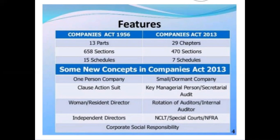The Companies Act 2013 is divided into 29 chapters. There were 658 sections in the 1956 Act and 470 sections in the 2013 Act, with seven schedules. Some new concepts introduced in the 2013 Act include: one-person company, small and dormant company, class action suits, managerial personnel and secretarial audit, women and resident directors, rotation of auditors and internal auditors, independent directors, NCLTs, special courts, NFRIs, and corporate social responsibility.